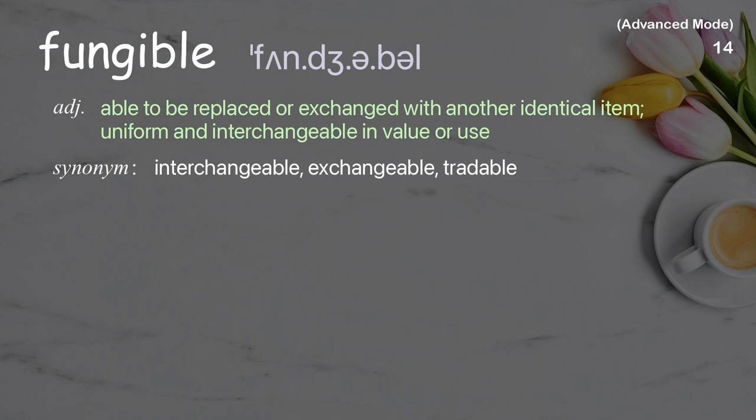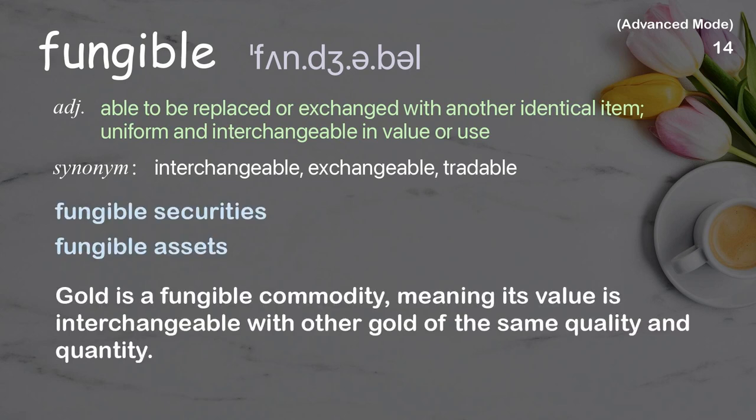Fungible: Able to be replaced or exchanged with another identical item; uniform and interchangeable in value or use. Examples: Fungible securities. Fungible assets. Gold is a fungible commodity, meaning its value is interchangeable with other gold of the same quality and quantity.